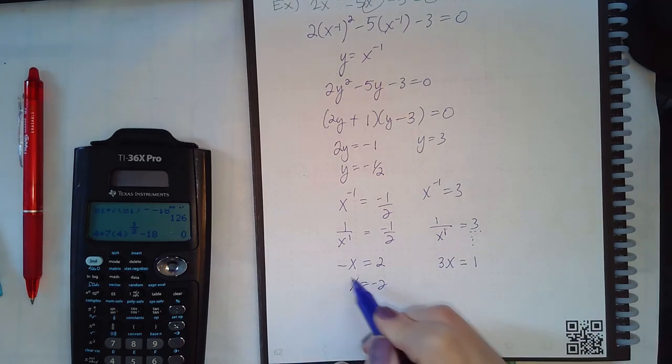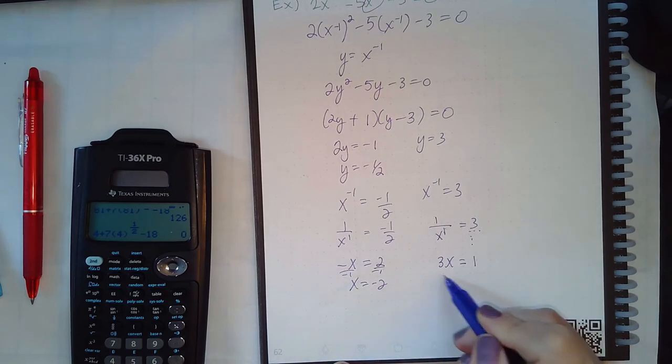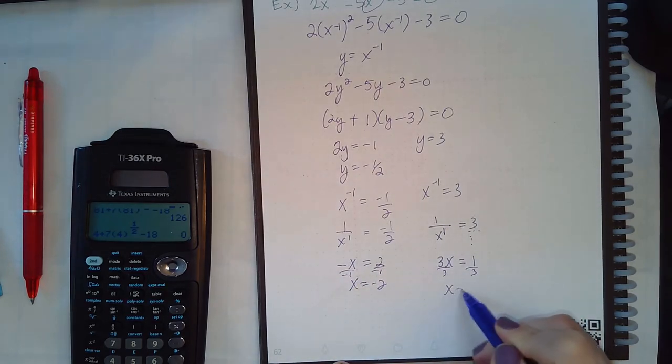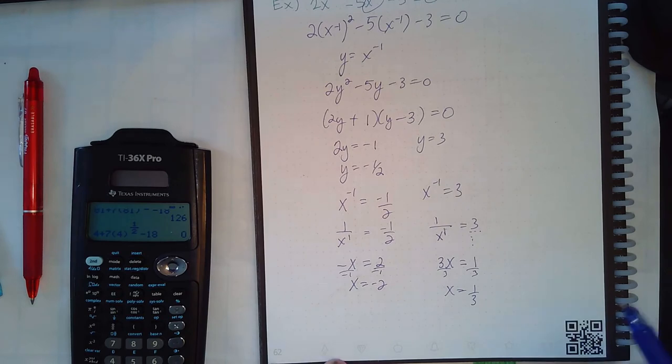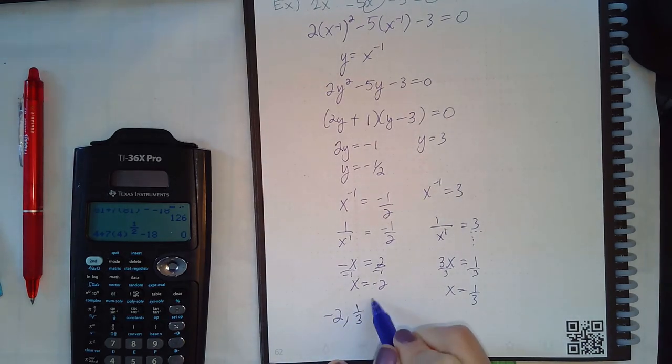So then I get x equal to negative 2, and here I get x equal to one-third. So we have two solutions here: negative 2 and one-third.